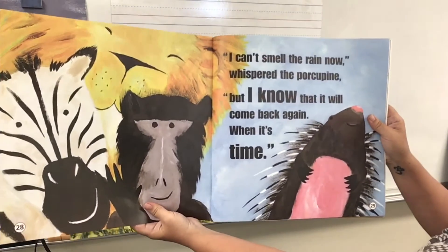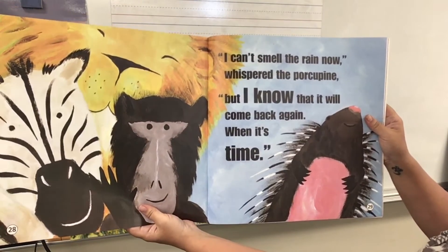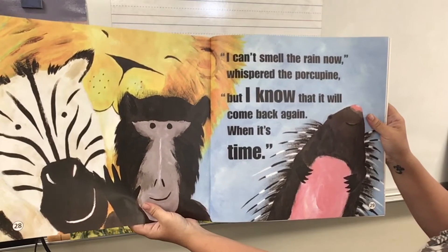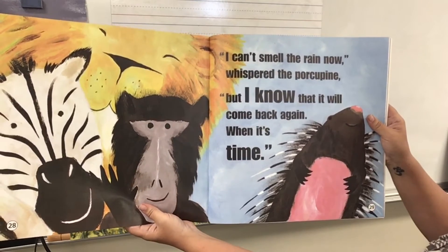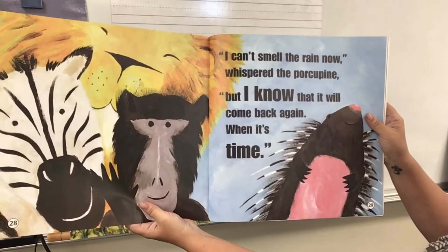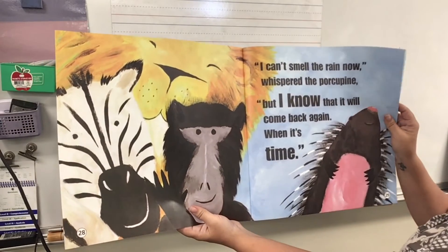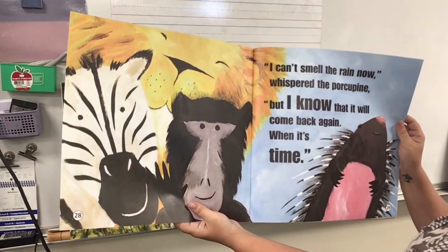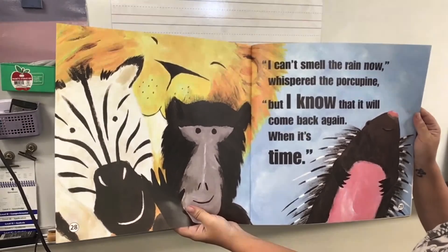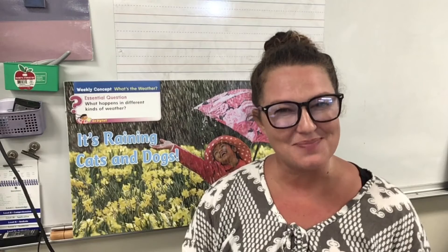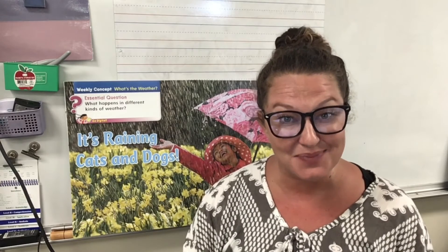'I can't smell the rain now,' whispered the porcupine. 'But I know that it will come back again when it's time.' Looking at all the animals, they look nice and happy. What a beautiful setting for our story to take place in. I'd like to learn more about Africa.